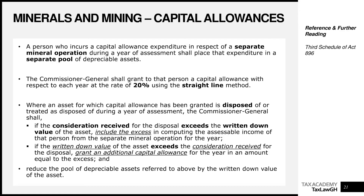Let's go to minerals and mining operations. Watch how similar they are to petroleum. A person who incurs capital allowance expenditure in respect of a separate mineral operation during the year of assessment shall place that expenditure in a separate pool of depreciable assets — same as petroleum. The Commissioner General shall grant a capital allowance with respect to each year at the rate of 20% using the straight line method — same as petroleum operations.